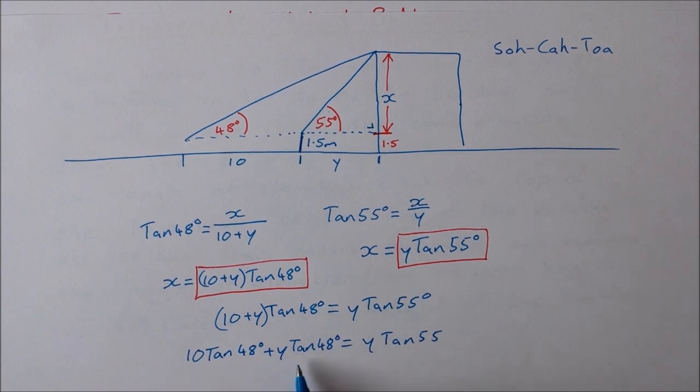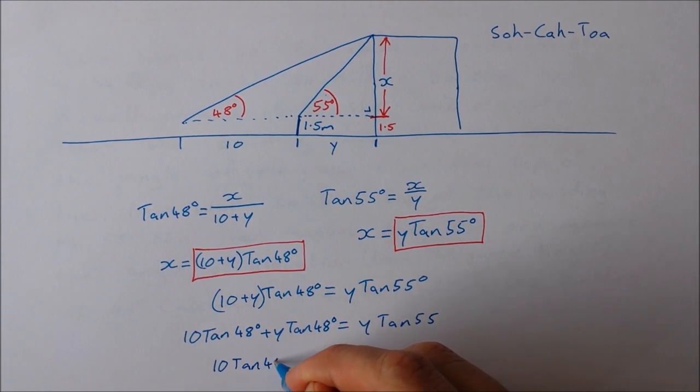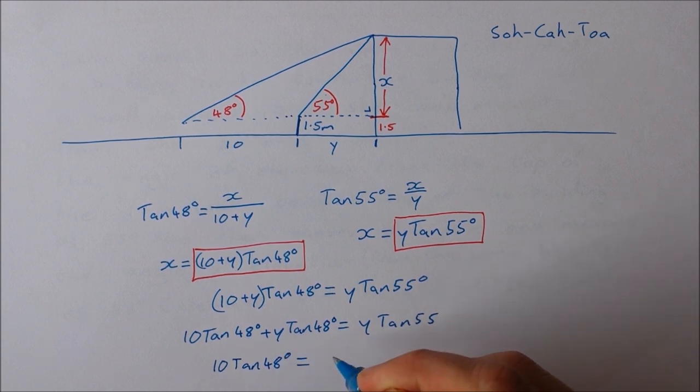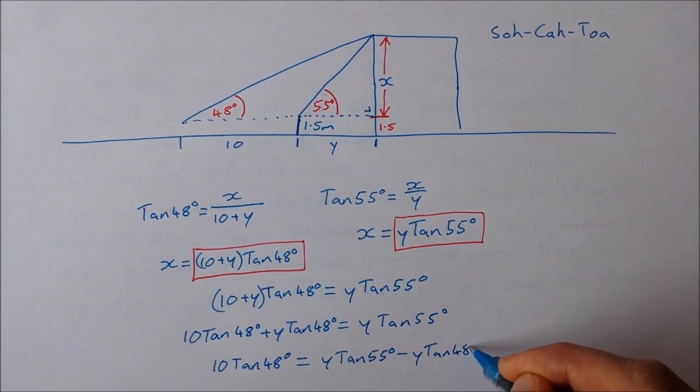So I'm going to take y tan 48 from both sides. So that'll give me 10 tan 48 is equal to y tan 55 minus y tan 48.